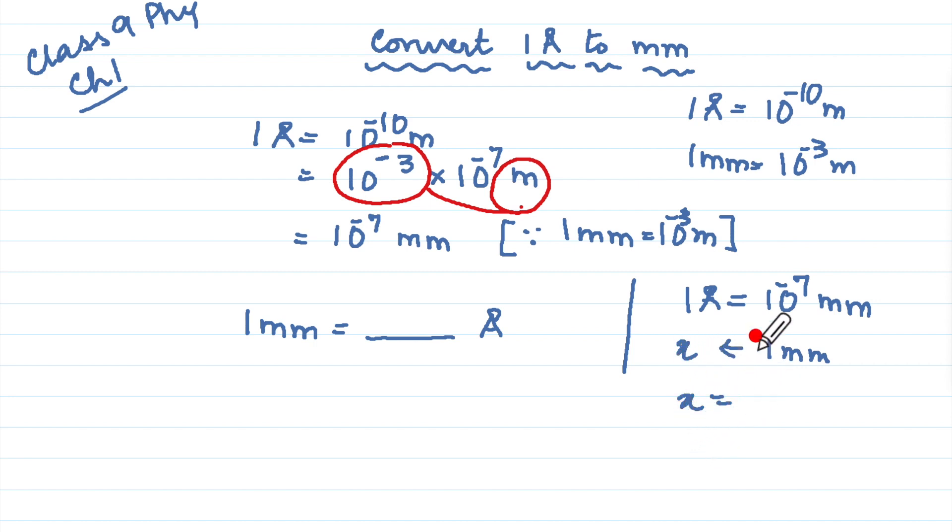So this x will be equal to cross multiply 1 into 1 upon 10 to the power minus 7, which is equal to 10 to the power 7 because this negative exponent comes in the numerator becomes positive. So we will have 1 millimeter will be 10 to the power 7 angstrom units.